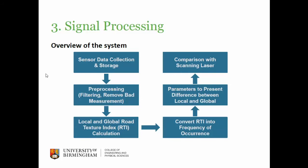Then we calculate the local and the global road texture index (RTI), which we use to measure the condition of the road surface. We convert this RTI into the frequency domain and then calculate three parameters to classify the difference between the local and the global. If the local and the global are very different, we say this road section is not good; otherwise it's good.